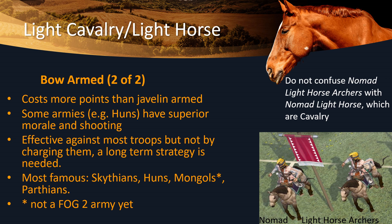Because their strategy is to shoot at the enemy, you need to have a long-term strategy for winning with them — you have to chip away at your opponents. You won't get them all in one go but you will get them eventually. The most famous horse archers are the Scythians, the Huns, the Mongols and the Parthians. One thing to be wary of is not to confuse Nomad Light Horse archers with Nomad Light Horse, because Nomad Light Horse are actually cavalry.